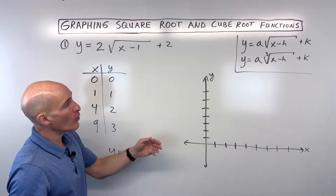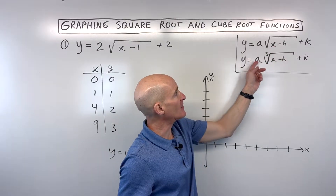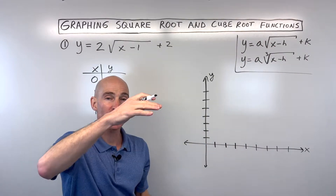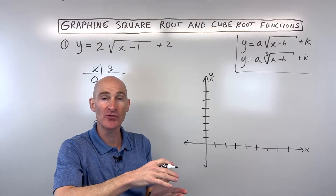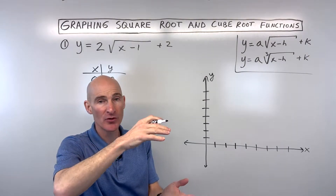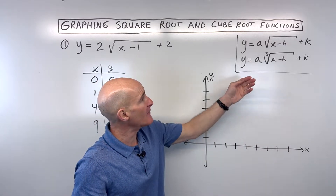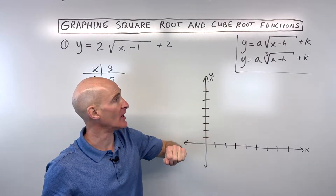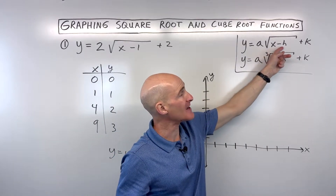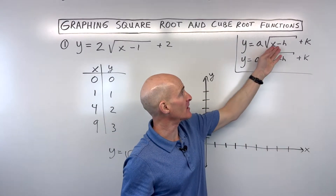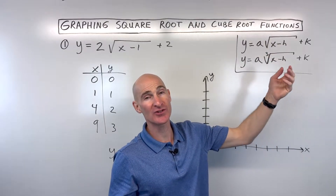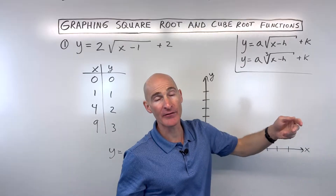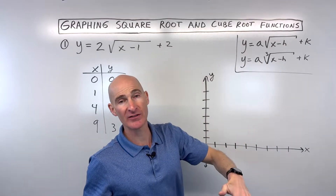When these equations are in this form, the a value — the number in front of the radical symbol — is going to be your vertical stretch or shrink. If a is greater than 1, it's a stretch. If it's between 0 and 1, it's a shrink. If it's a negative number, it's going to reflect it over the x-axis. The h value shifts it left and right but has the opposite effect — minus 2 means going right 2, plus 2 means going left 2. The k value shifts the graph up and down.